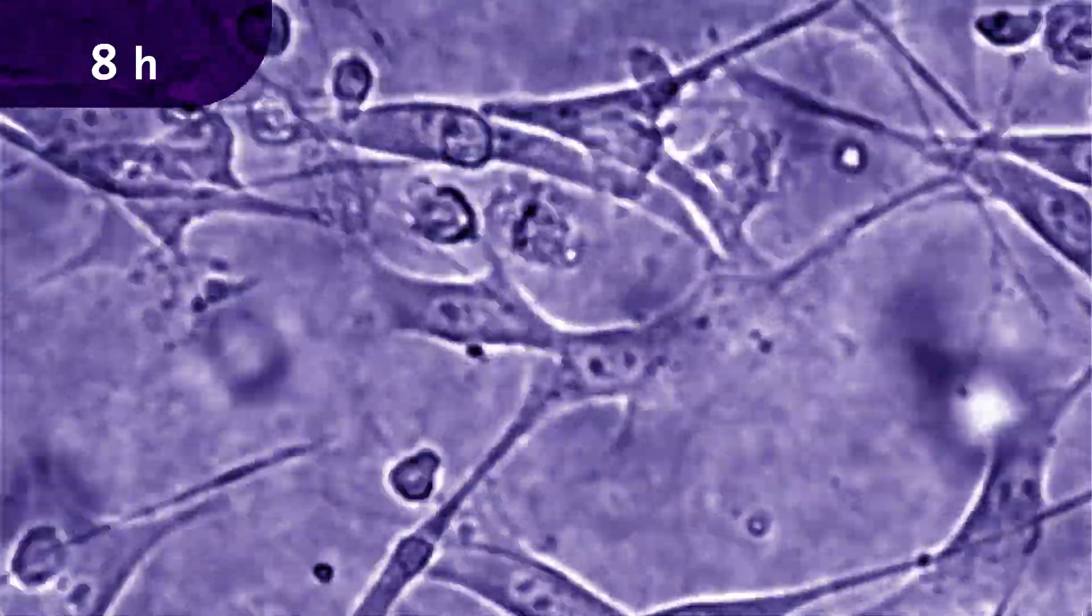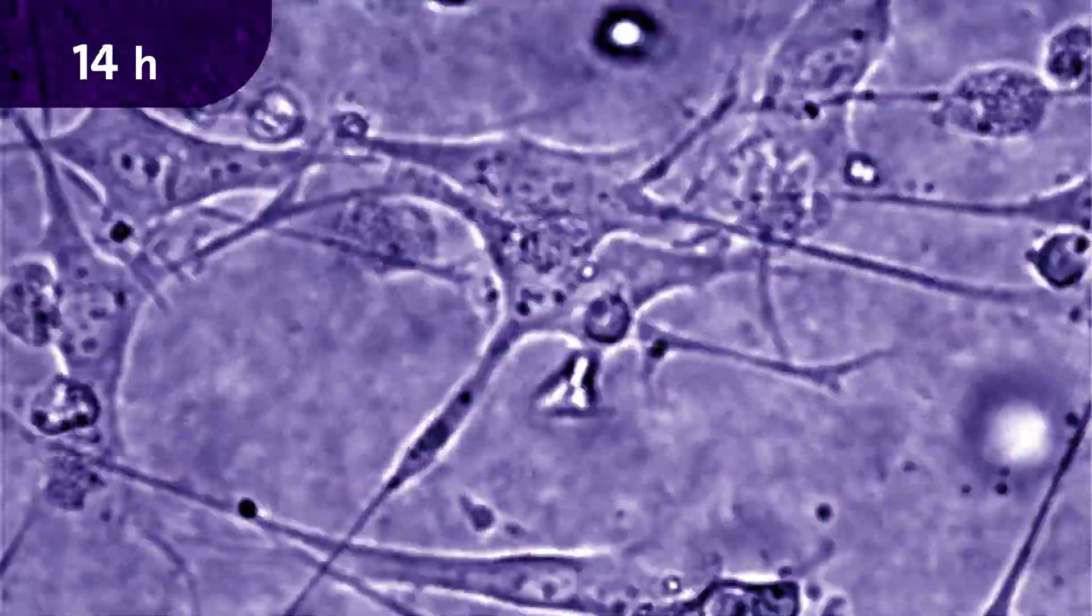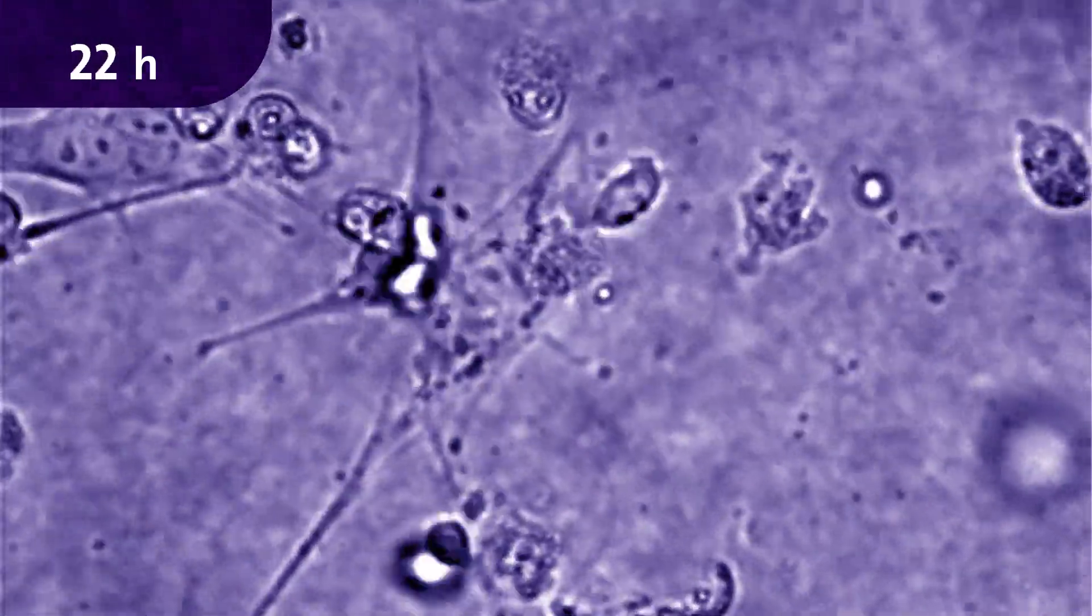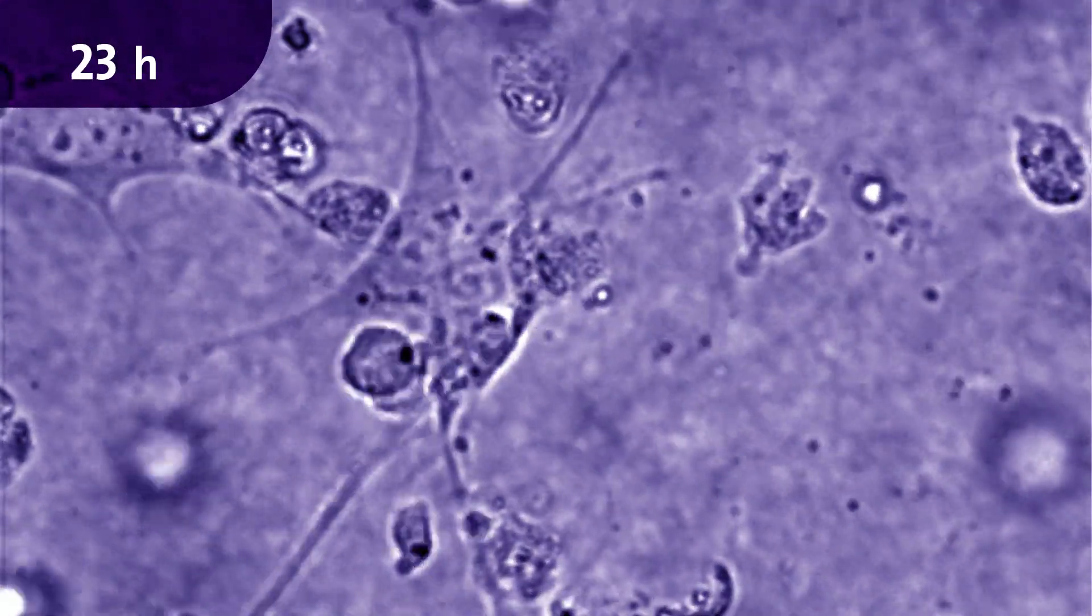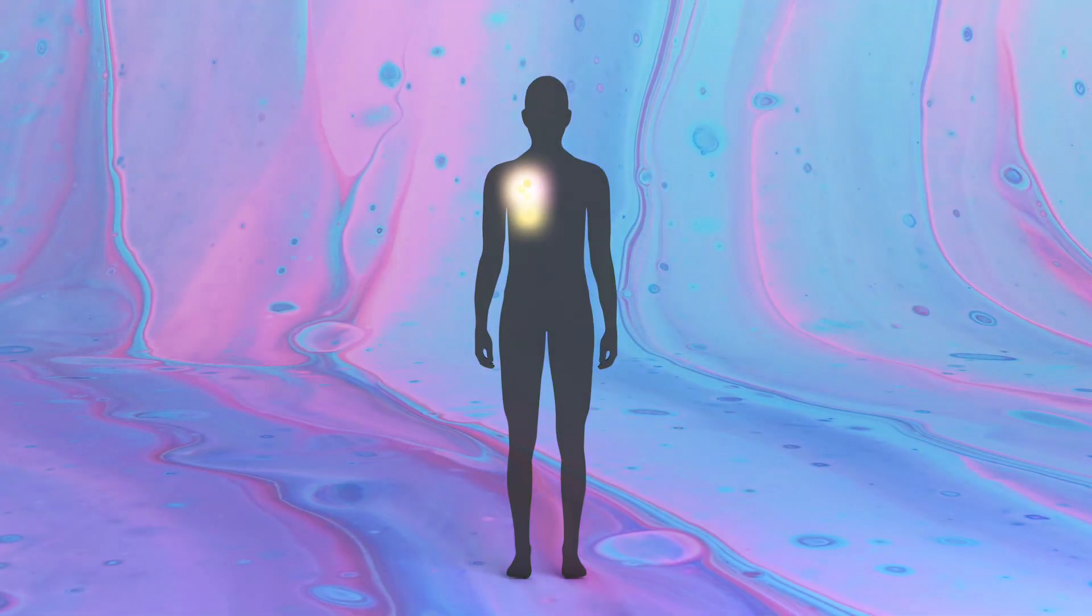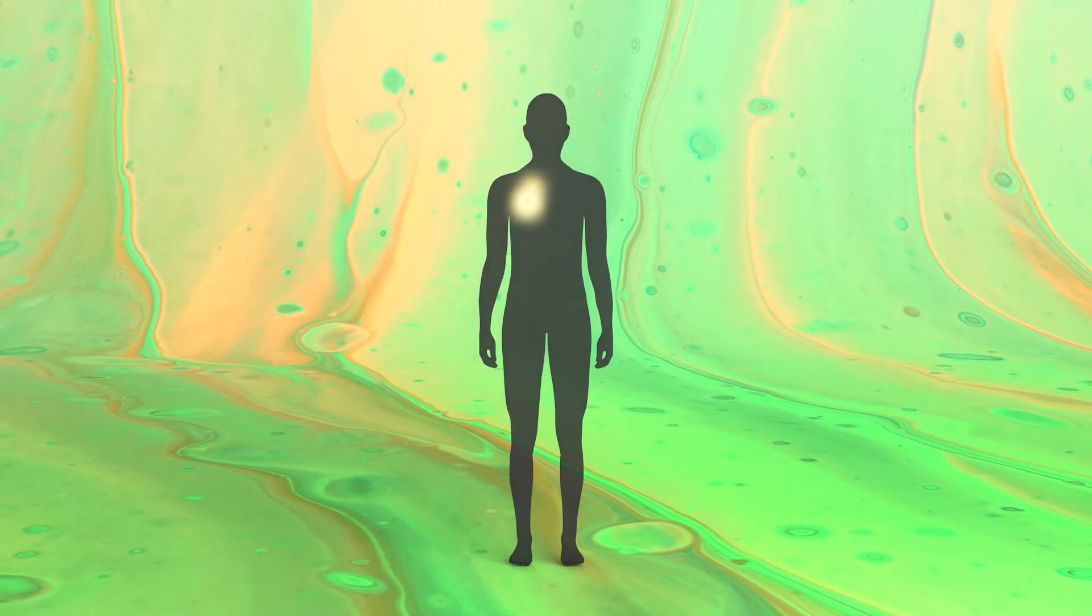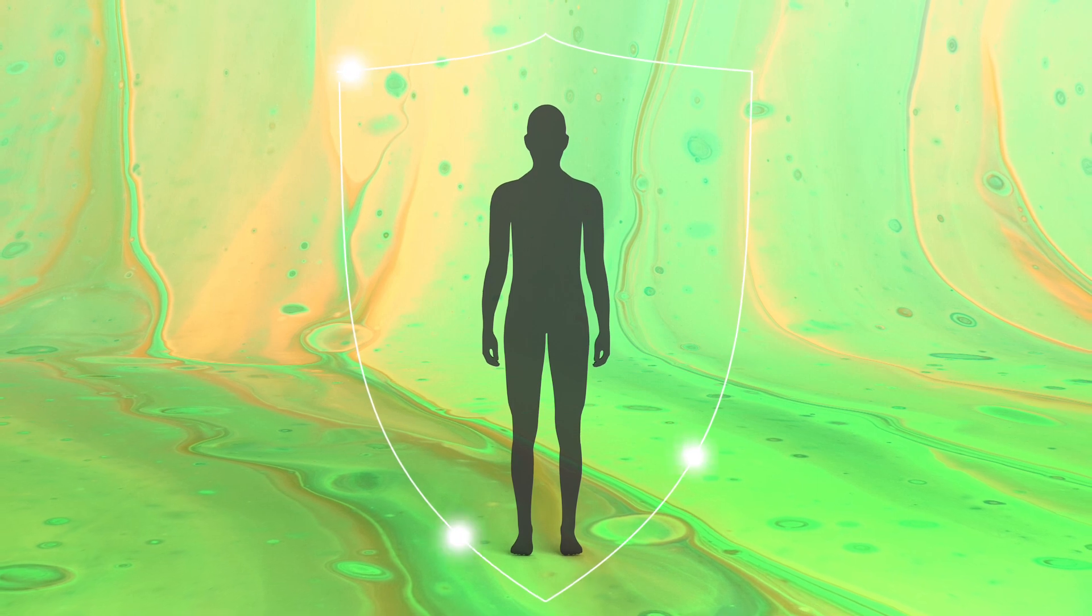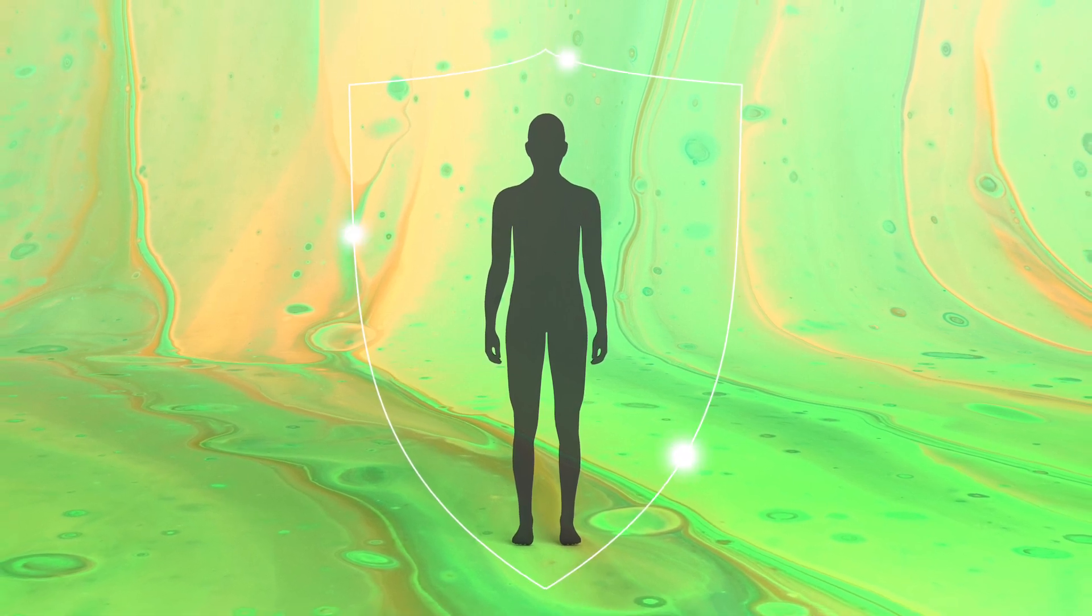The T cells perform a thorough job. After 23 hours, most tumor cells have been destroyed. Although tumor cells regularly form in us, as a rule, they are identified and eliminated by our immune system. This efficiency is an important reason why we so rarely develop tumors.